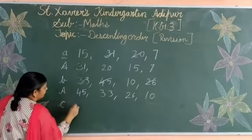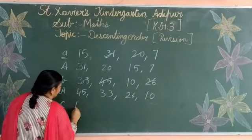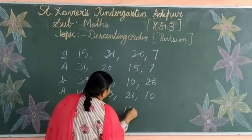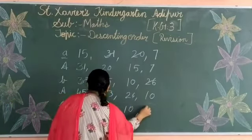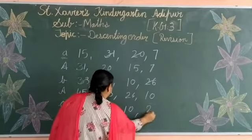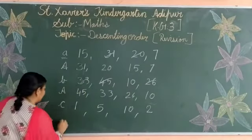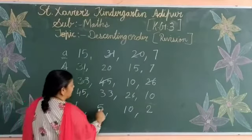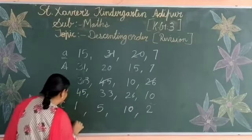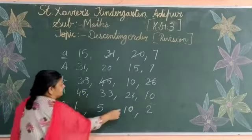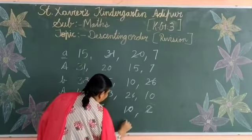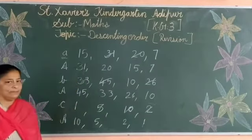One more example. Numbers: 1, 5, 10, 2. Which one is the biggest one? Yes, number 10, then number 5, then number 2, and number 1.